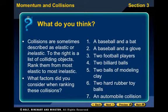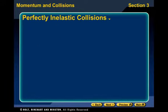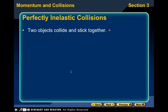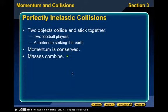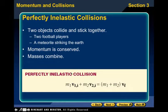Perfectly inelastic is when two objects collide and stick together — like the two football players, a meteorite striking the earth, or a bullet hitting a block. Momentum is conserved. The masses combine after the collision. We already did an example of this with the two football players combining.